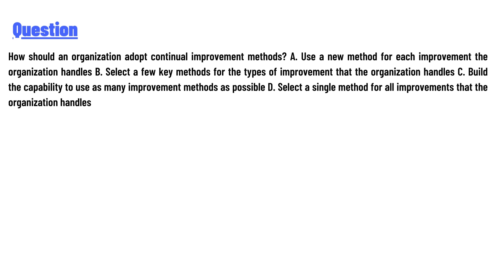The options are: A — use a new method for each improvement the organization handles; B — select a few key methods for the types of improvement that the organization handles; C — build the capability to use as many improvement methods as possible; D — select a single method for all improvements that the organization handles.